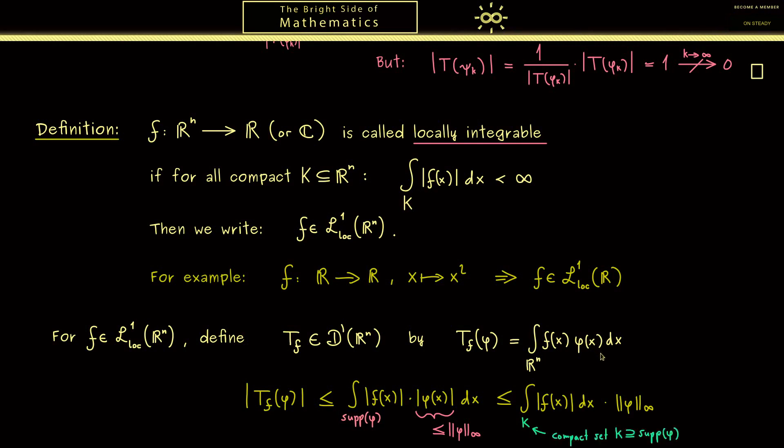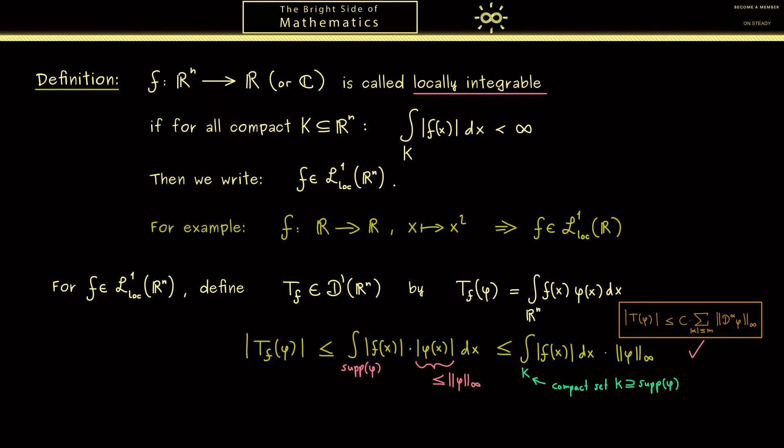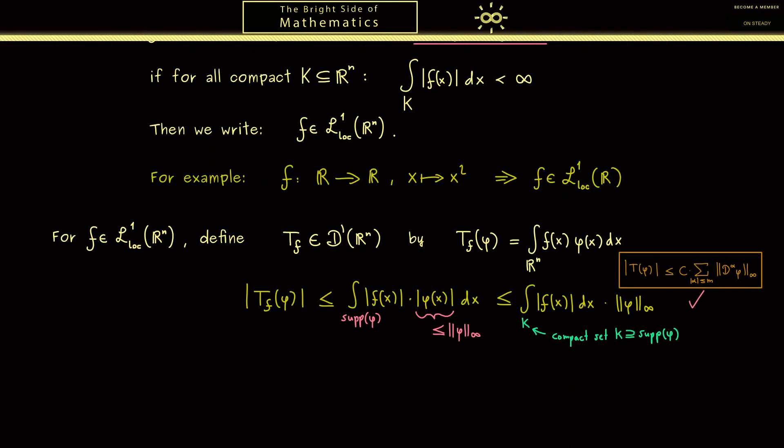Now please remember what the estimate is we want to show. And there you see the integral here is the constant c here, and the sum is just the sum where m is 0, so we just have the supremum norm of phi. In other words, we have indeed a distribution. So you see this is similar to what we had in the last video, where we considered continuous functions. The distribution here is essentially given by a normal function f.